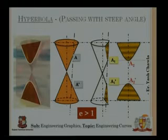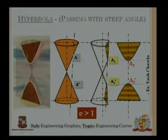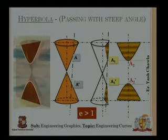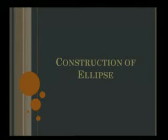For a hyperbola, the cutting angle has to be very steep. For a circle, the plane is parallel. For an ellipse, it is at a slight angle. For a parabola, it is parallel to the cone's edge. For a hyperbola, the plane makes a very steep angle with the axis — almost tending to 90 degrees but not quite — resulting in a hyperbola.